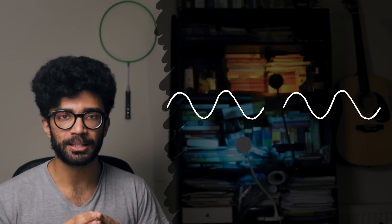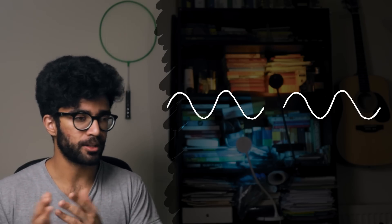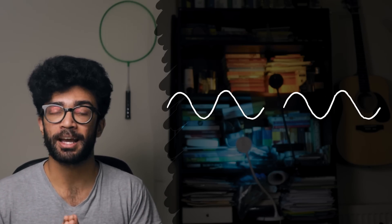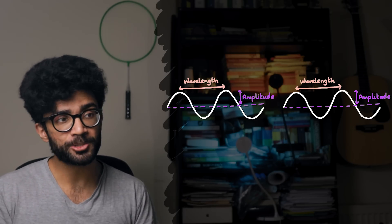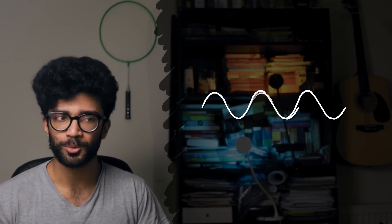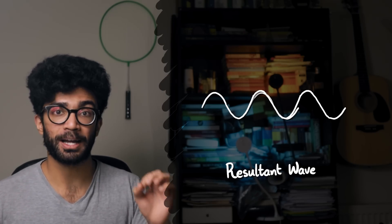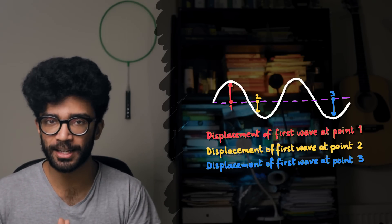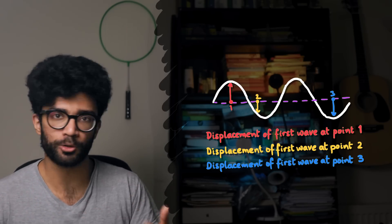What happens when secondary waves from different point sources interact with each other? These secondary waves are going to behave just like any other kind of wave — they're going to interfere. Let's take a quick moment to talk about wave interference. Let's imagine we've got two sinusoidal waves. We're looking at them from the side so we can see their peaks and troughs. These two waves are the same kind — both light waves or both water waves — and they have the same amplitude and wavelength. The only difference is that they are moving toward each other, which inevitably means at some point they're going to overlap and meet.